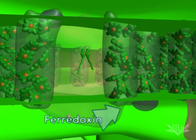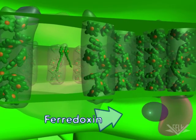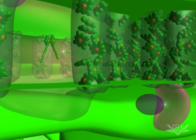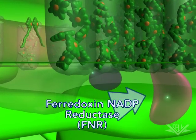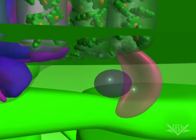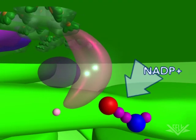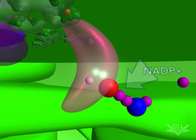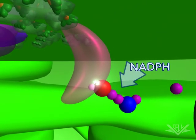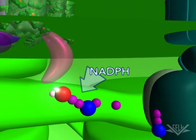Ferredoxin then transfers the electrons to the ferredoxin NADP reductase, also known as FNR. After two electrons are transferred to FNR, NADPH is made by adding the two electrons and a hydrogen ion to NADP.